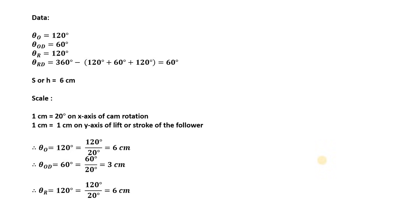So the data is: out stroke is 120 degrees, out stroke dwell is 60 degrees, return stroke is 120 degrees, and the remaining angle will be the return dwell — that is 360 minus the summation of all three angles. So it is 360 minus (120 + 60 + 120), which gives 60 degrees. Lift or stroke of the follower is 6 cm and minimum radius of the cam is 5 cm.